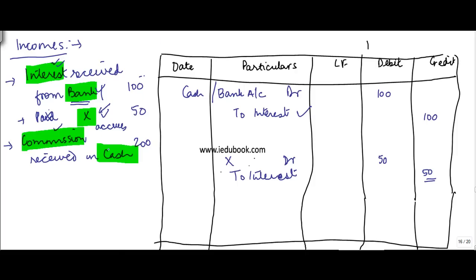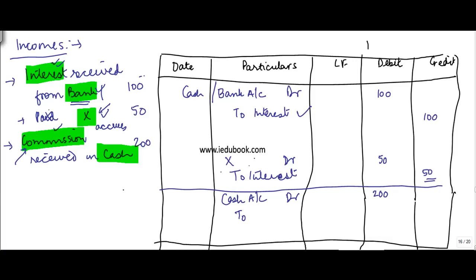The second example is commission received in cash. The accounts involved are the commission account and the cash account. When you receive commission in cash, cash is an asset and an increase in an asset is to be debited. Why did you receive this cash? You received it on account of commission, so commission is the other account. Commission is an income account, and an increase in an income account is credited, so you credit the commission account by 200. That's the way you make entries for incomes.